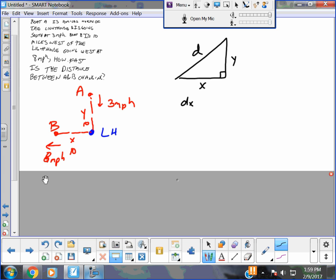I know that dX/dt, I know X is getting bigger, so that's positive 8. I know dY/dt is getting smaller, so that is negative 3 from my picture.